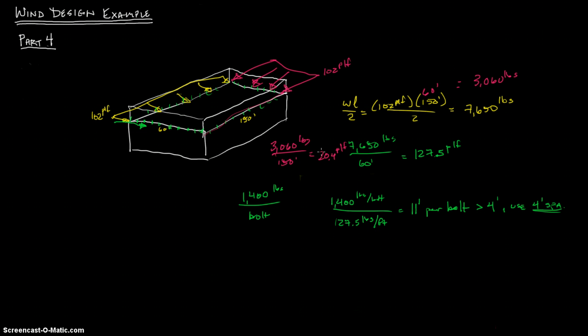You can see that 20.4 is much less than 127.5. If you want to divide this out, 1400 divided by 20.4, it's actually 68.6 foot per bolt. As you can see, that is much greater than the 4 foot, and you'll also use 4 foot spacing for your bolts.